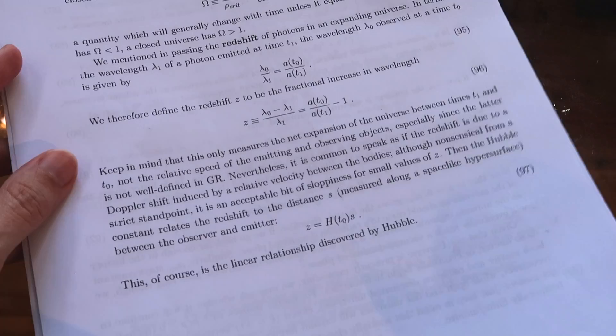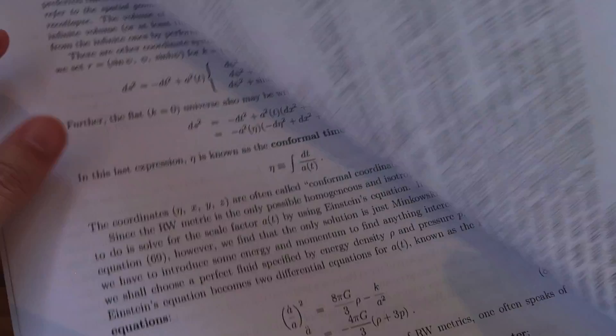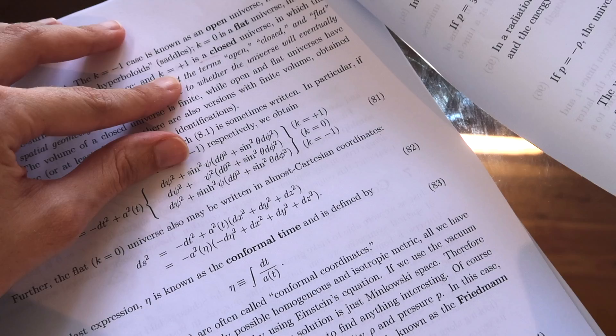The notes finish off with a little bit of a mention of Hubble and cosmology and how you can use GR equations to talk about an open flat or closed universe.